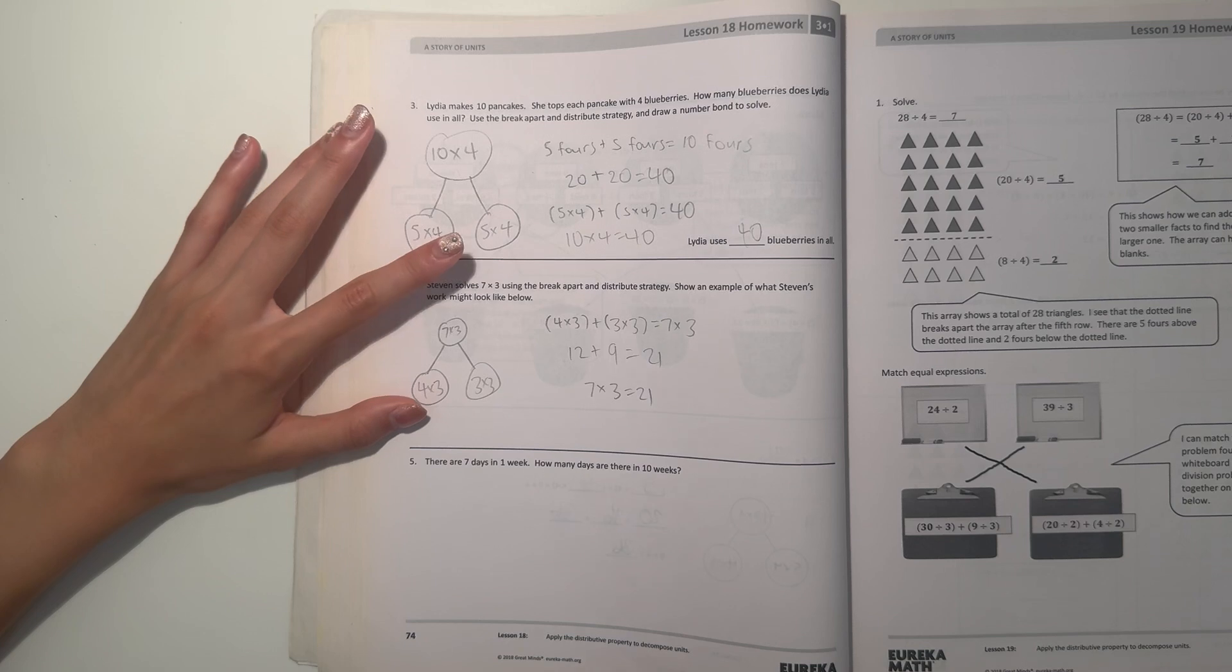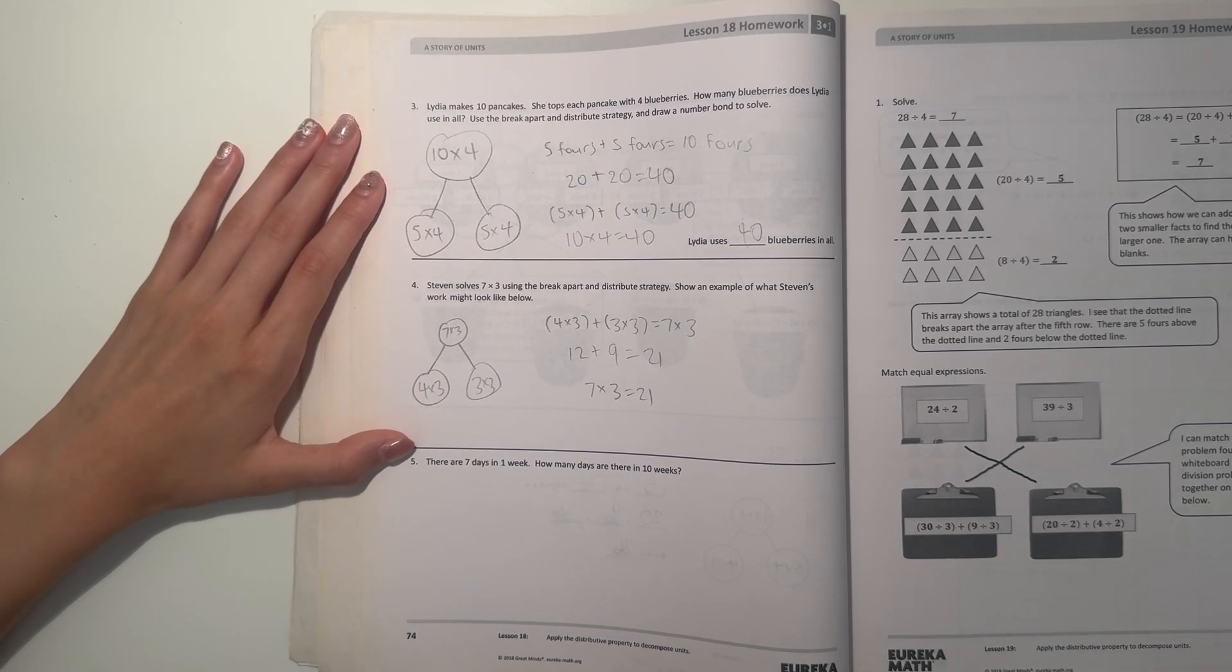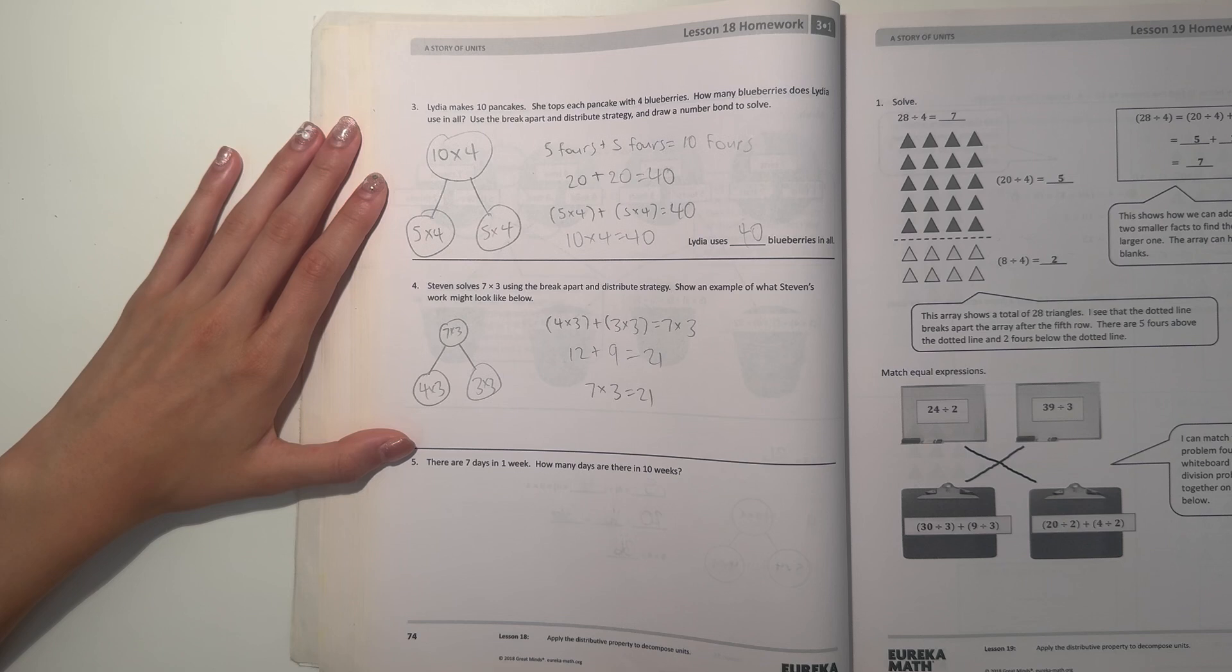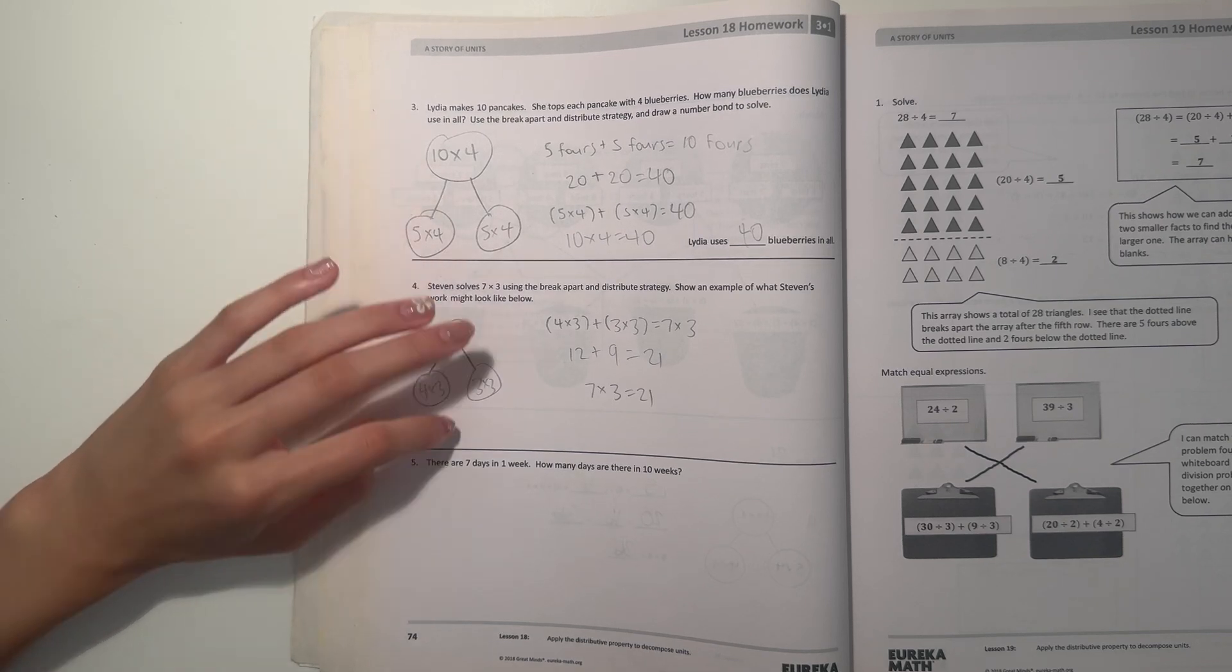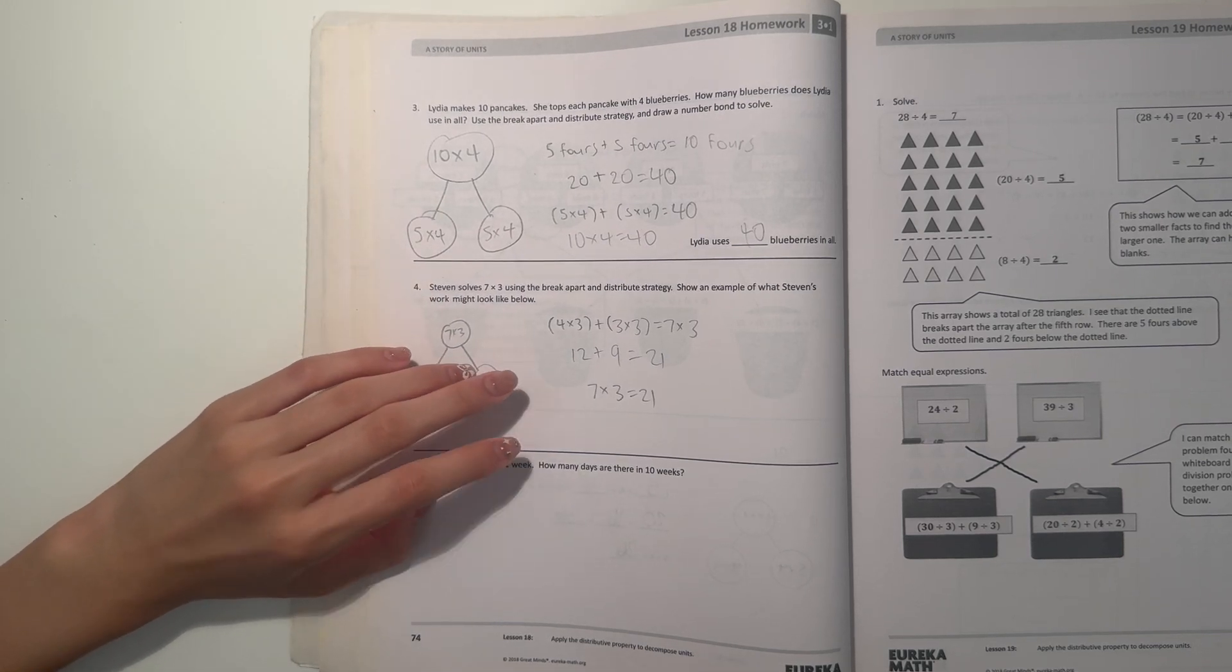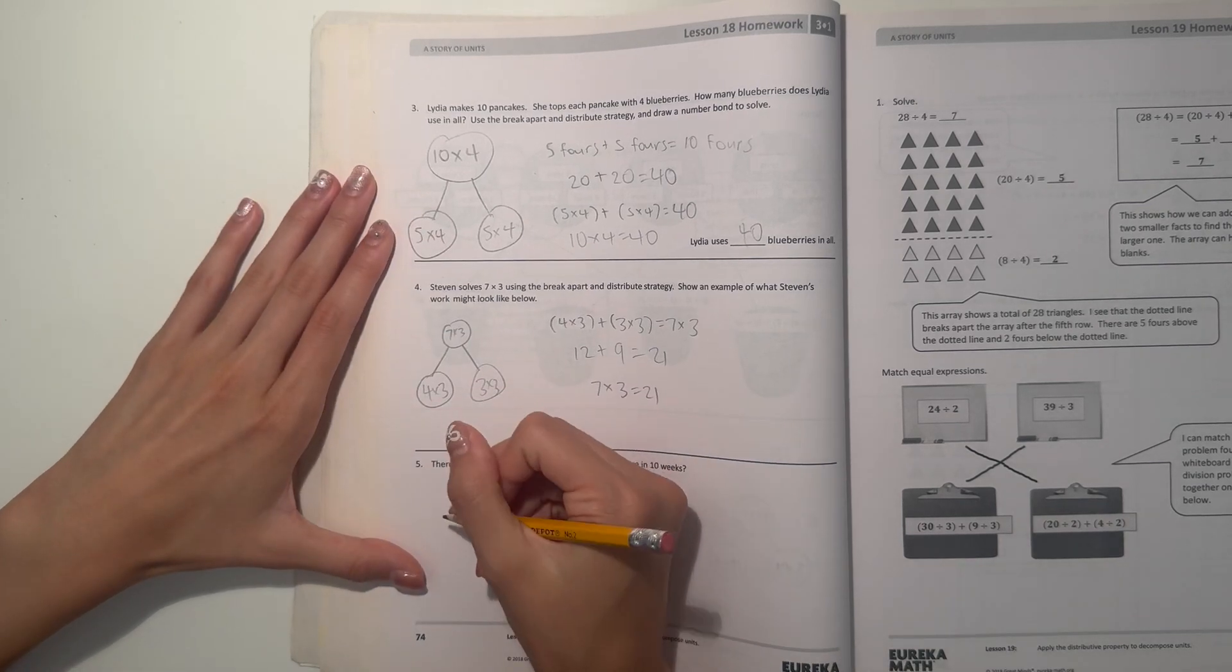Number five. There are seven days in one week. How many days are there in ten weeks? So let's see, seven days in a week, and we have to find out ten weeks. So let's do ten times seven.